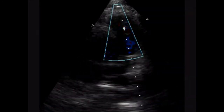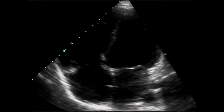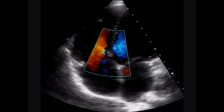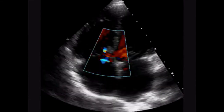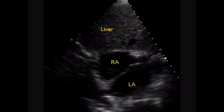This is the pulmonary flow after repair — good flow. And this is the apical four chamber view showing all four chambers. Now we have a four chamber view showing the tricuspid regurgitation which is persisting.